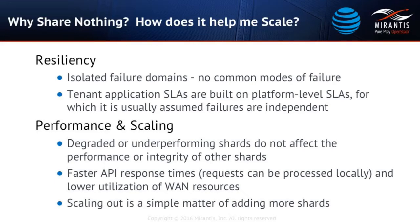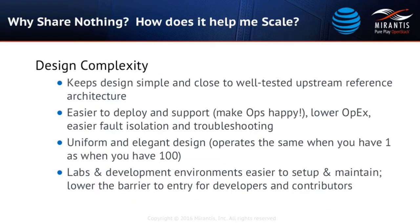Performance and scaling: similarly, if there's a degraded condition or underperforming shard — slow API response in one of your regions — that's not going to affect other regions. There's also design complexity to consider. With shared-nothing, you can keep the design relatively simple, staying close to a well-tested upstream reference architecture with better test coverage. It's easier to deploy and support from an ops perspective, and fault isolation and troubleshooting are easier as well.